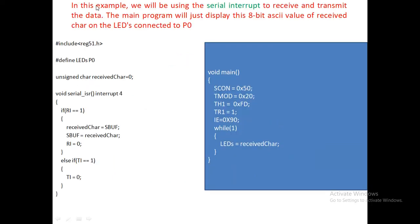This is the program. In this example we will be using the serial interrupt to receive and transmit data. Once the transmission is completed, the TI flag is going to be set, and once TI is set, the interrupt is going to be generated. For reception, once you receive data from an external device such as a GSM module or a PC, once successfully received, the RI bit is going to be 1, and if RI is set, the interrupt is generated.